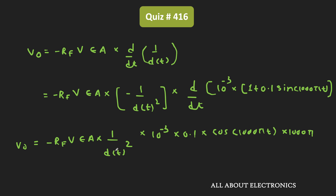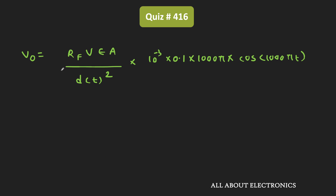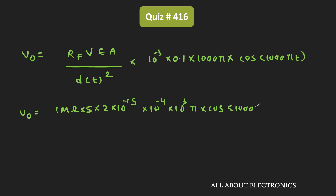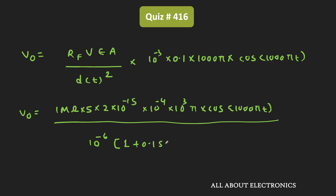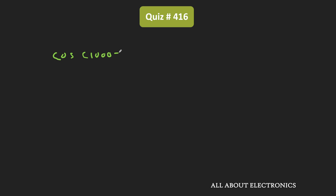So let us put this value of εA in the earlier expression and find the output voltage at t equal to 2ms. Here Rf equals 1MΩ and V equals 5V. Substituting all values, Vout equals 1MΩ times 5V times 2×10⁻¹⁵ times 10⁻⁴ times 10³π times cos(1000πt), divided by 10⁻⁶ times (1 + 0.1 times sin(1000πt))². At t equal to 2ms, cos(1000π × 2×10⁻³) equals cos(2π) equals 1.